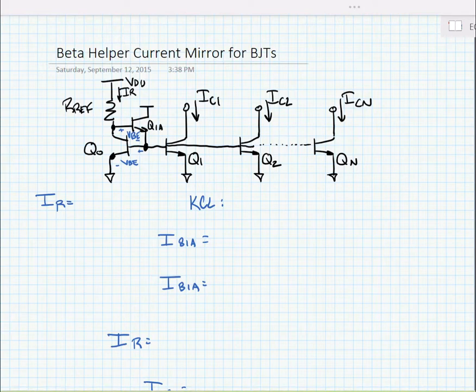To fix that, we're going to add a buffer Q1A that will buffer the voltage between the bottom of the reference resistor and all the connected bases of the transistors.